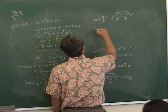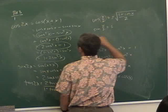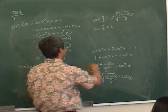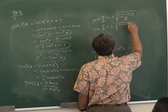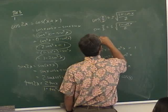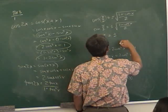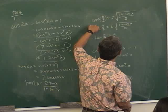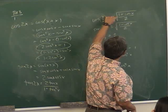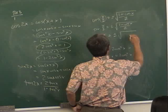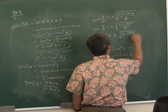For sine(x/2), using the same approach with the identity cosine(2x) = 1 − 2sine²x, you get: sine(x/2) = ±√((1 − cosine x)/2). And tangent(x/2) is just sine divided by cosine, giving ±√((1 − cosine x)/(1 + cosine x)).